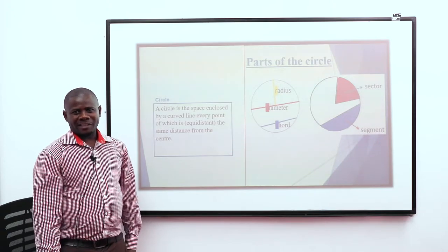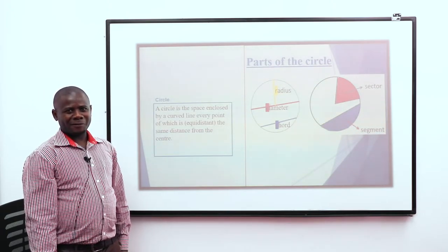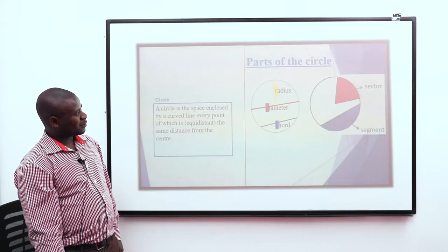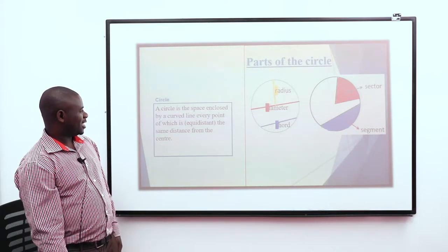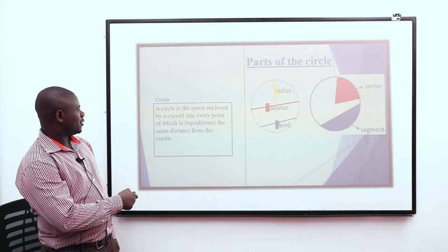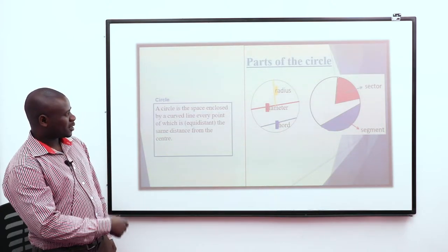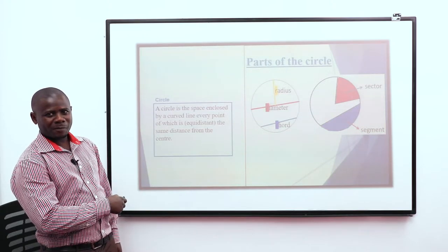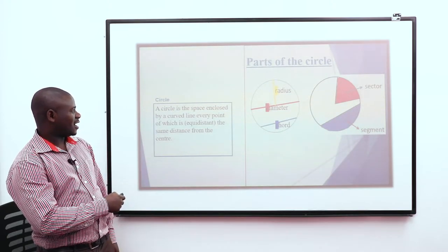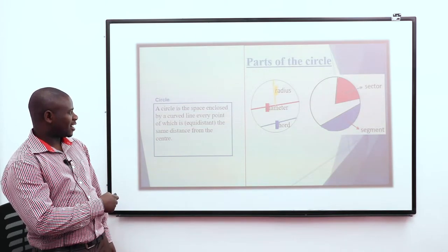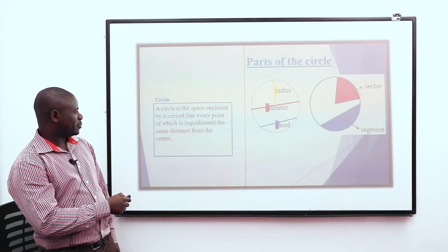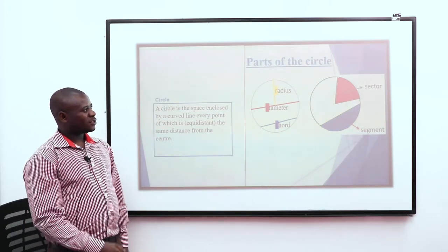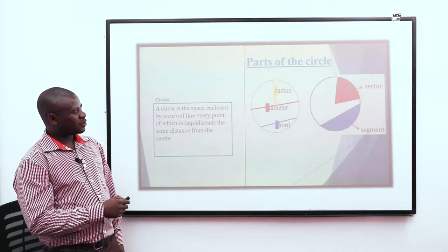Before we look at that topic, there is a need for us to look at the major parts of the circle, then the meaning of the word circle. So in this context, when we talk of a circle, we mean a space enclosed by a curved line, every point of which is the same distance from the center.